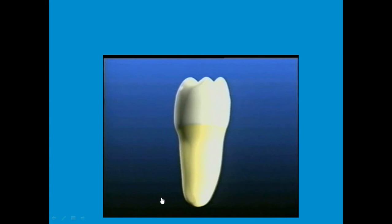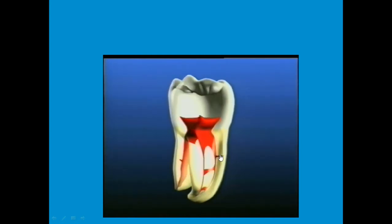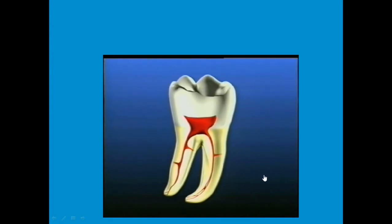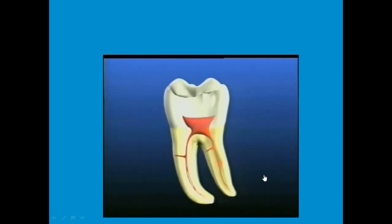Now that you have seen the series of slides on endodontic treatment, if we are to perform it, we must first know the anatomy of the pulp inside — what are the branches, how complex is it? The anatomy of the pulp is not as simple as it looks on a radiograph. The radiograph gives only a two-dimensional image, whereas in reality the pulp is very complicated, with rami or connections between root canals and many projections.